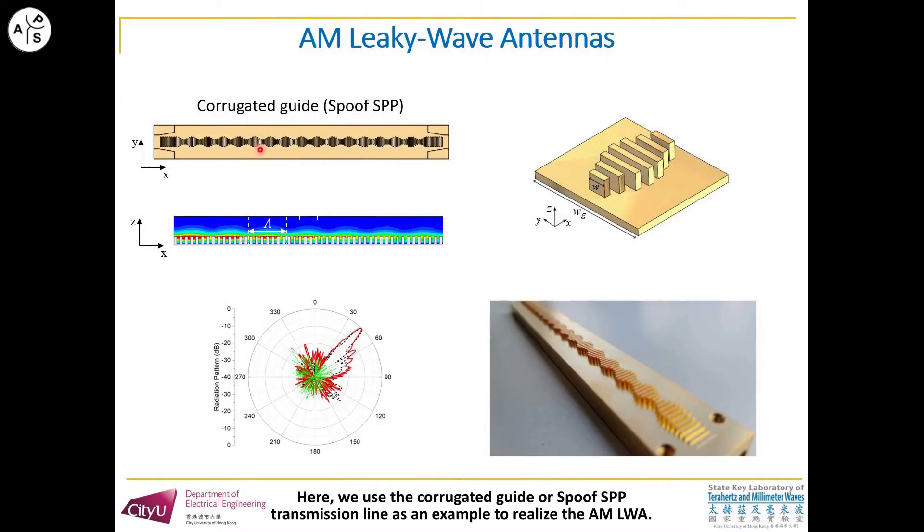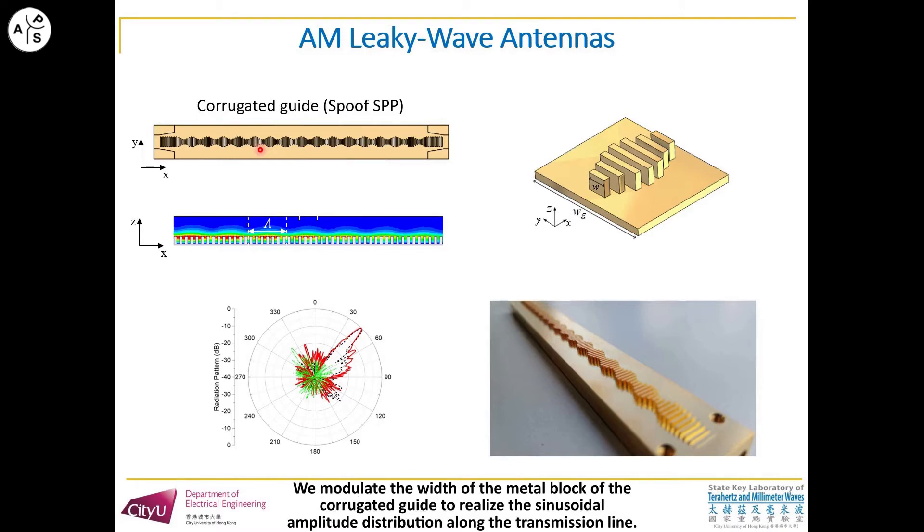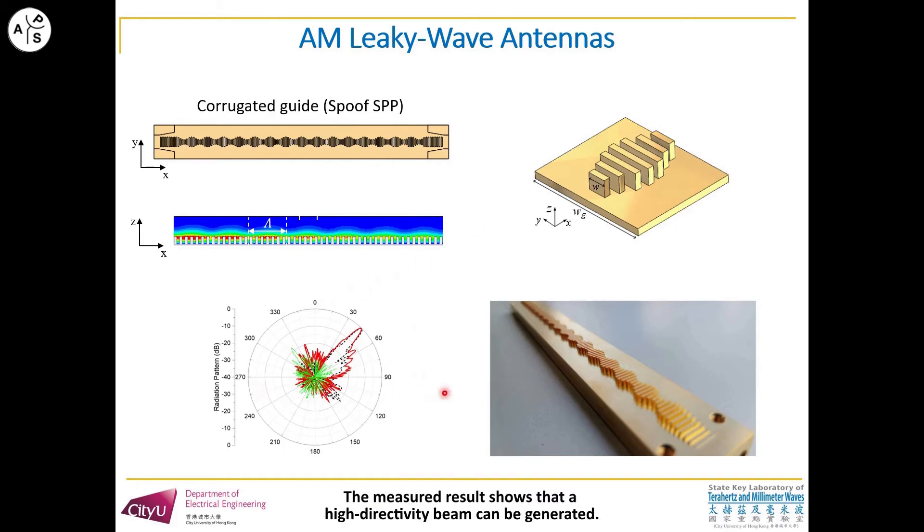Here we use the corrugated guide or spoof SPP transmission line as an example to realize the AM leaky antenna. We modulate the width of the metal block of the corrugated guide to realize the sinusoidal amplitude distribution along the transmission line. The result shows that a high-directivity beam can be generated.